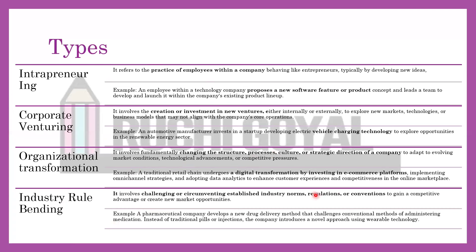So basically in Intrapreneuring we considered an activity and used that particular entrepreneur for our business to achieve innovation. In Corporate Venturing, we established a brand new business with a new product — like Tata into EV vehicles. In Organizational Transformation, we modified the existing business. In Industry Rule Bending, we created a new disruption within existing rules. There is also a fifth type from the book: Incubative Entrepreneurship — this category generates and nurtures new ideas and ventures within the organization, for example Microsoft and Apple bringing new products and product differentiation in the market.